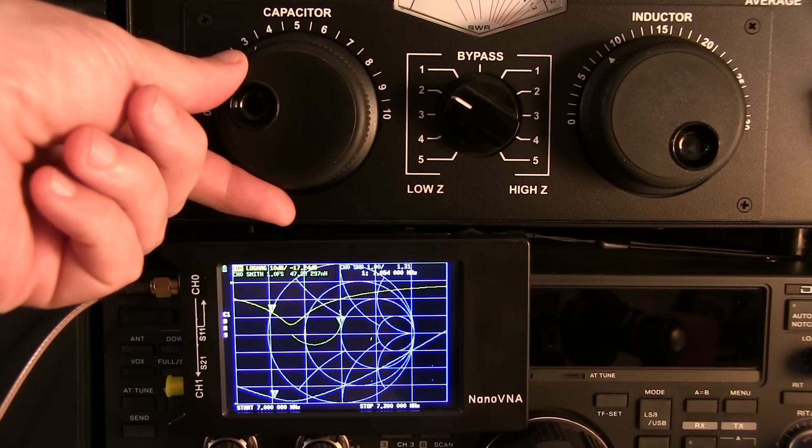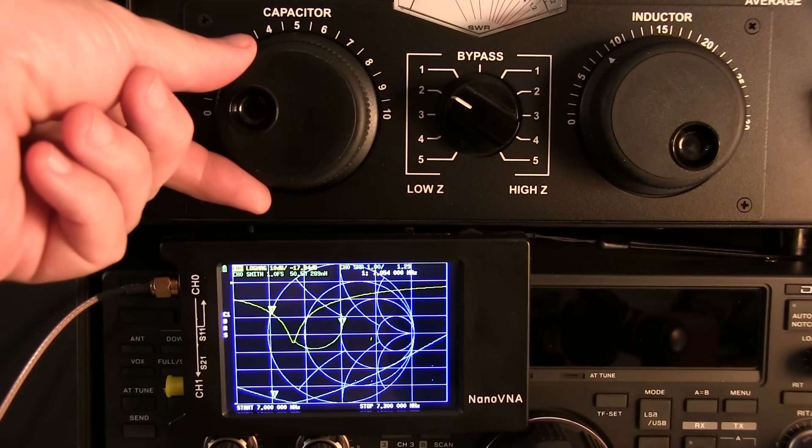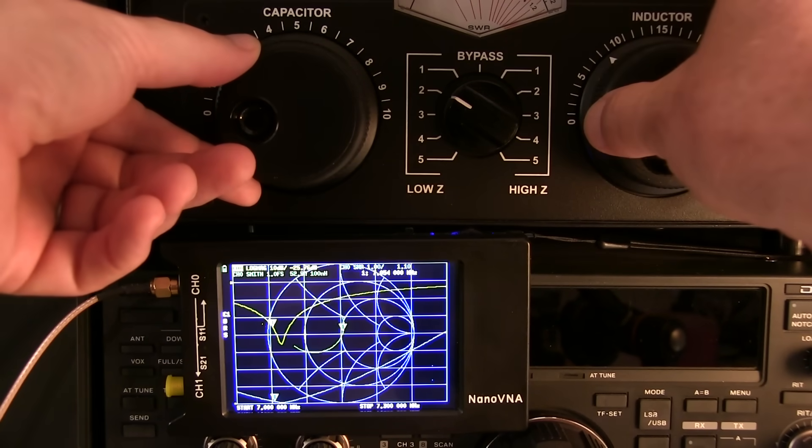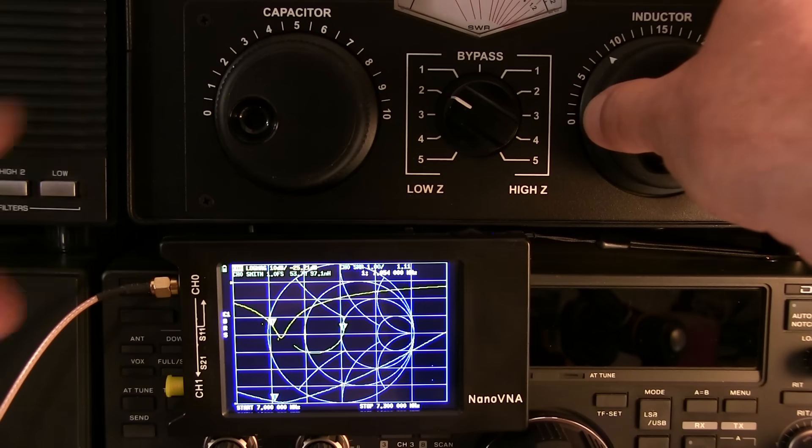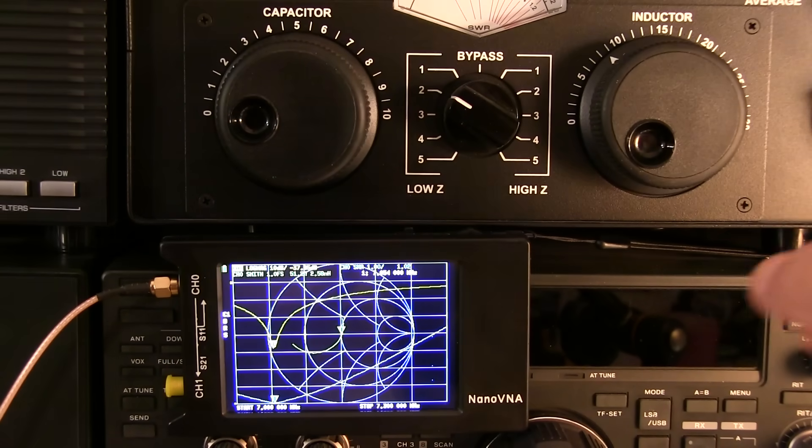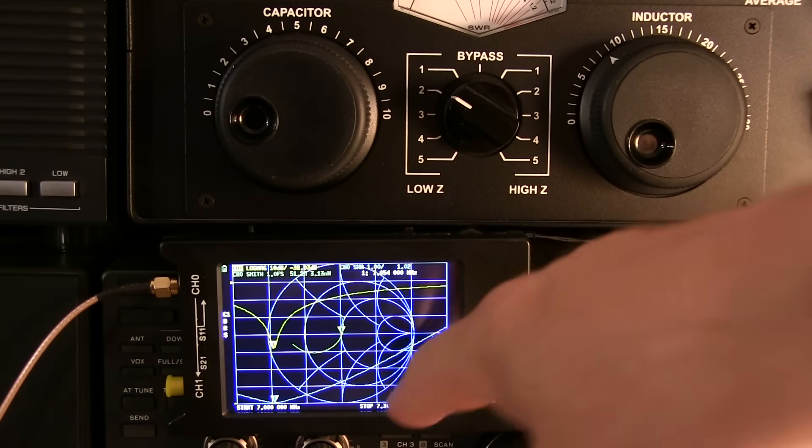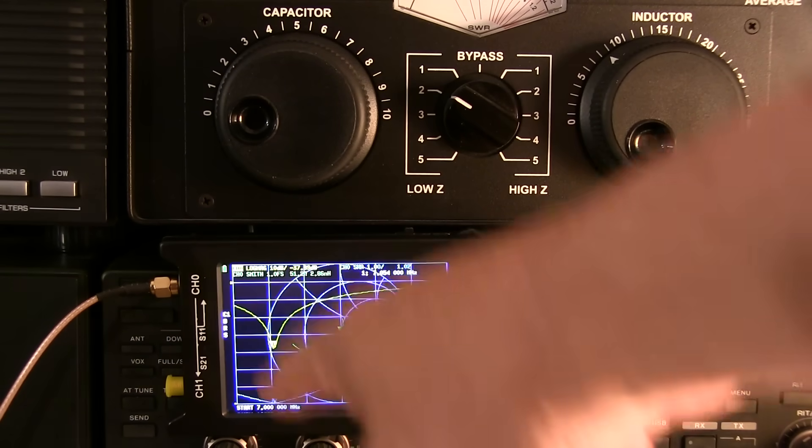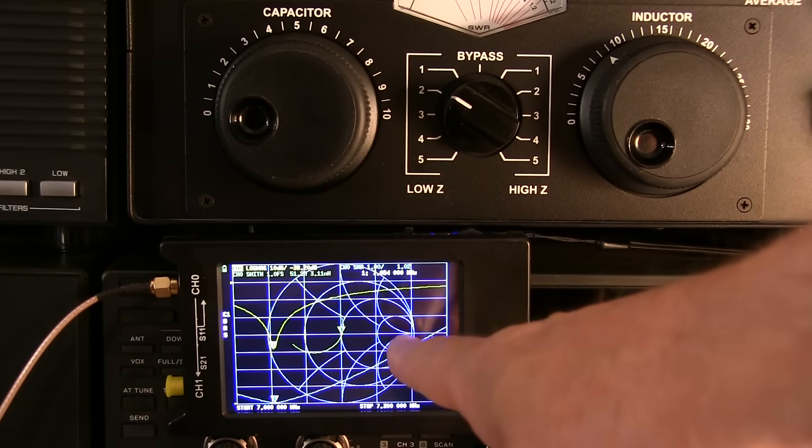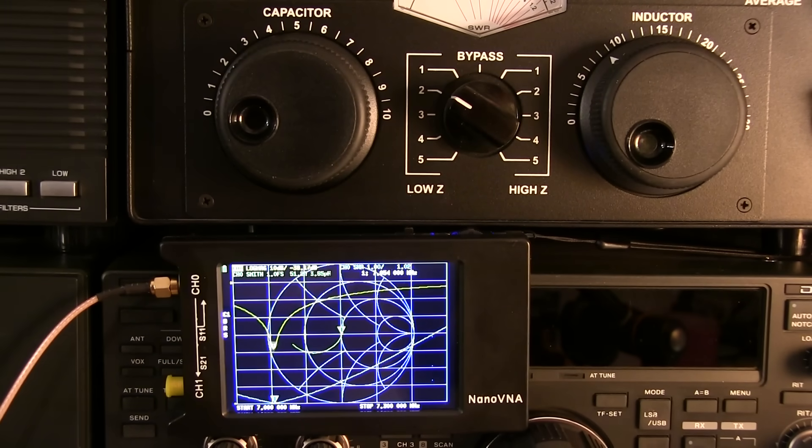So if we tweak on that a little bit, I can see I'm deepening the null there on the reflection coefficient. And I'm getting pretty close. So you can see with just a little more fine tuning on the controls of the tuner, I've got myself pretty darn good at my desired point right there. SWR is about 1.02. I'm sitting right at the center of the Smith chart. Reflection coefficient is down around minus 30 something dB. So we've successfully retuned this antenna from the phone portion of the band down to the CW portion.